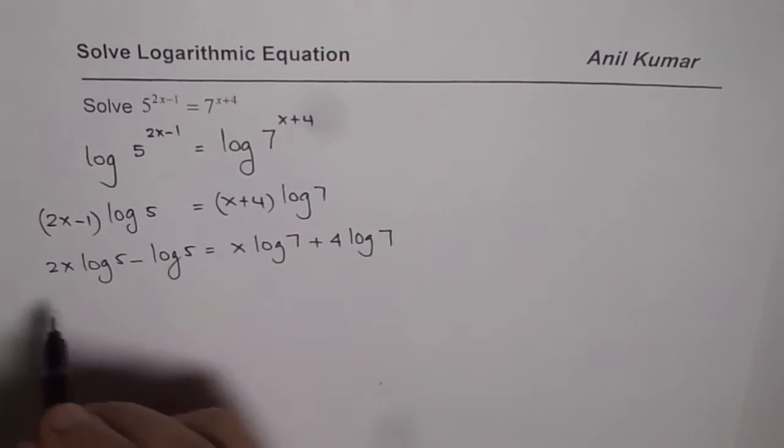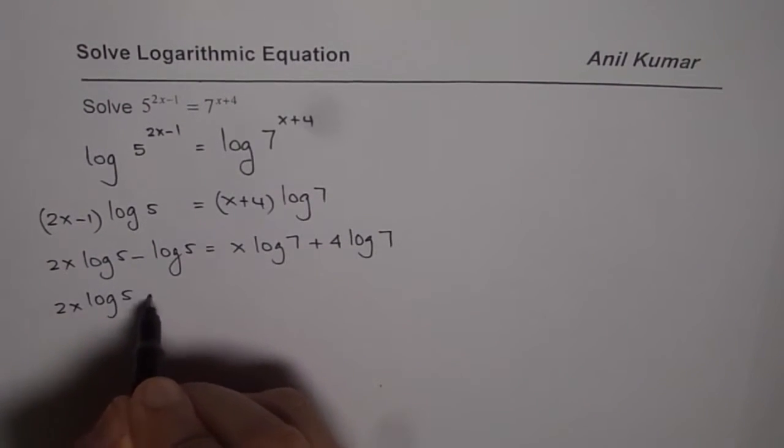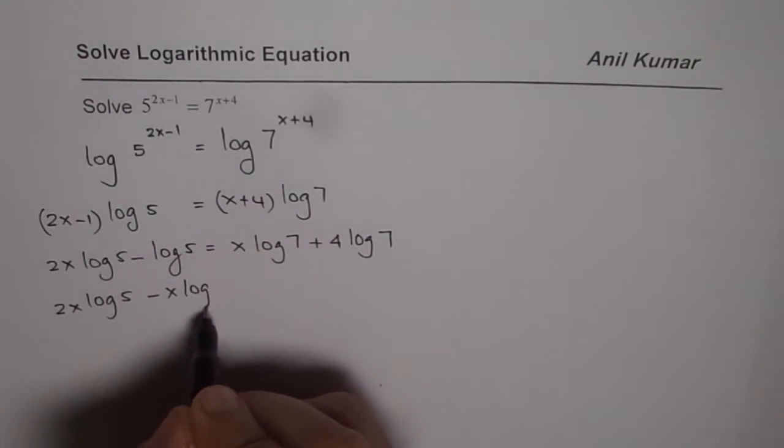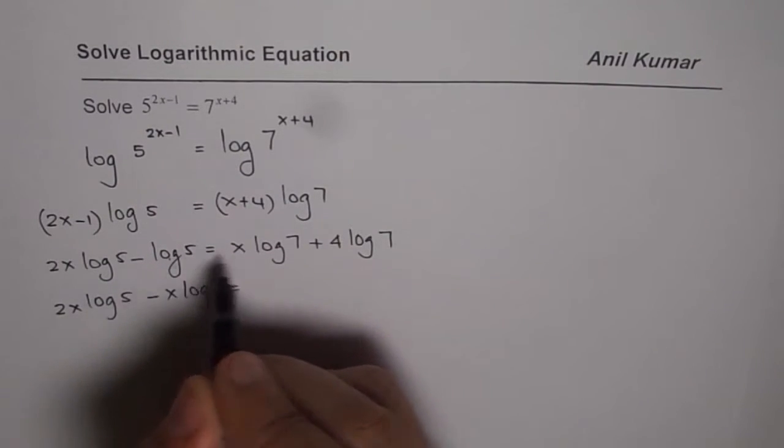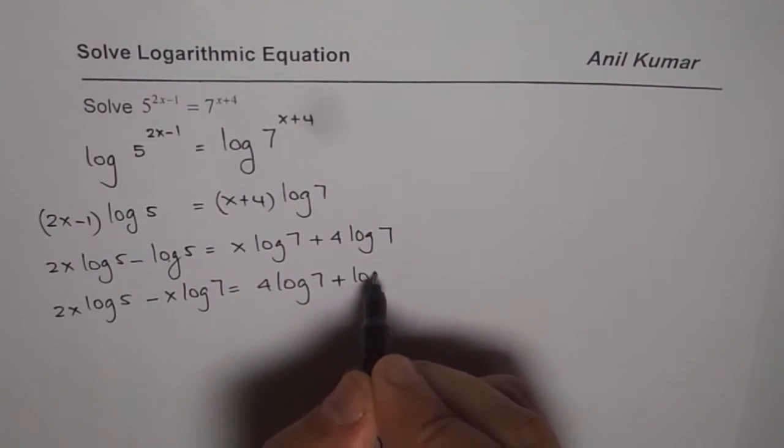Let's bring the x terms together. So we have 2x log of 5 minus x log 7 equals to, bringing it to the right, we have 4 log 7 plus log of 5.